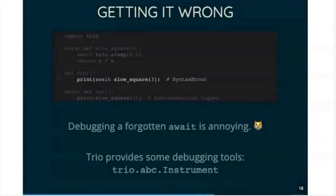The other thing you can get wrong is to forget to await an async code. So here we have, we're calling an async function, but we're not using await. And this, you get a runtime warning logged, and you don't get, well, what you actually get printed there is the representation of a coroutine object. But that's kind of an implementation detail.